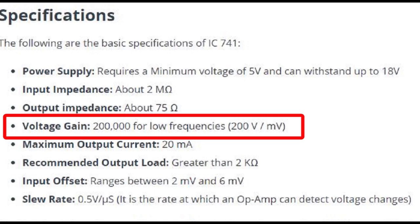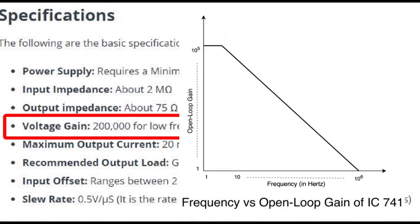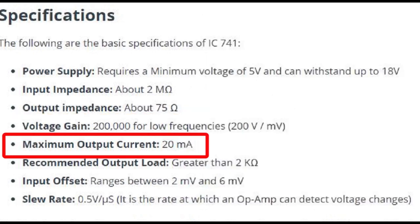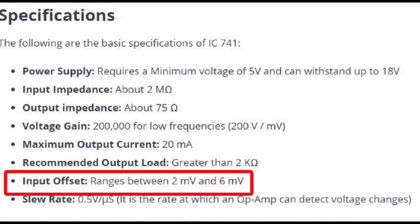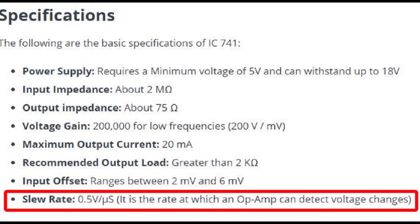Voltage gain for low frequency signal is around 2 lakhs, that is 200 volts per millivolt. However, it should be infinite gain for an ideal op-amp. In a frequency versus open-loop gain curve, it is clear that gain decreases as we increase the frequency of the input signal. Maximum output current is 20 milliamperes, and the output load should be greater than 2 kilo ohms. Input offset voltage ranges from 2 millivolts to 6 millivolts, and the slew rate is 0.5 volts per microsecond — it is the rate at which the op-amp detects voltage changes.